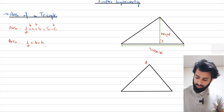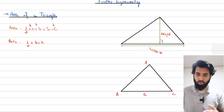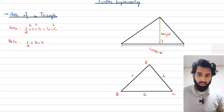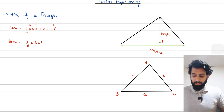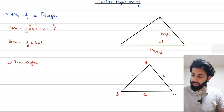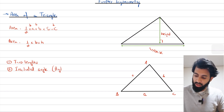Capital letters represent angles. The length opposite angle A is lowercase a, the length opposite angle B is lowercase b, and the length opposite angle C is lowercase c. When do we use this formula? Two conditions must be fulfilled: condition one — you should have two lengths; condition two — you should have an included angle, meaning the angle between the two lengths you intend to use.